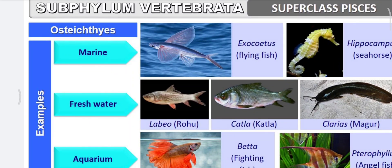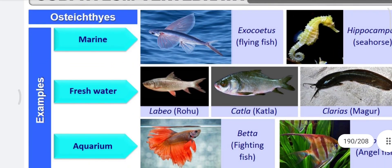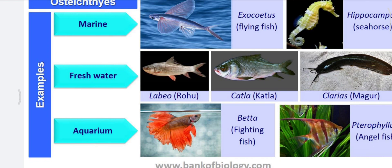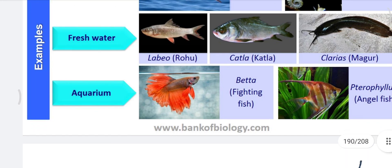Examples of Osteichthyes include marine and freshwater fishes. Marine: Exocoetus, the flying fish, with fins modified like wings; Hippocampus, the seahorse, where the male has a brood pouch and moves vertically. Freshwater: Labeo rohita (rohu), Catla catla, and Clarias (magur fish). Aquarium fishes include Betta, the fighting fish, and Pterophyllum, the angelfish.